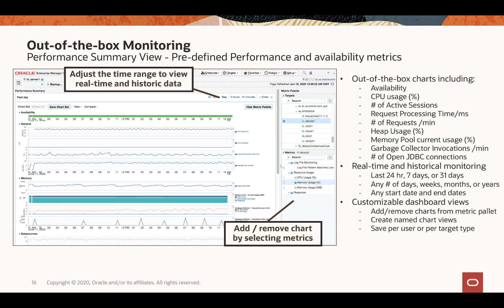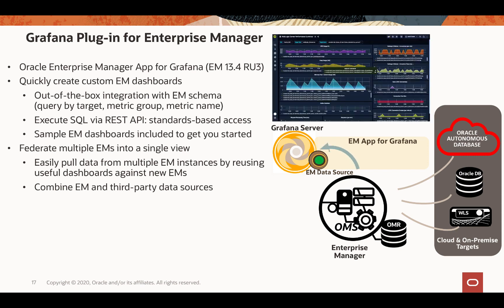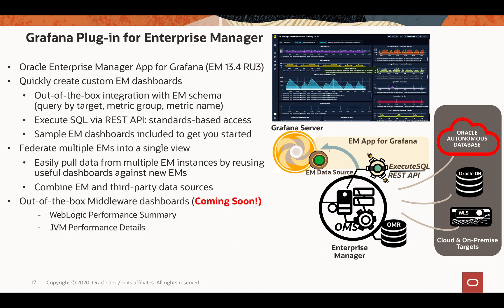In Enterprise Manager 13.4, you can also view the same information on a Grafana server. Grafana is an open-source technology for metric analytics and visualization. Starting from Enterprise Manager 13.4 release update 3, we have an Enterprise Manager app for Grafana, which is ready to plug into your Grafana server. This plugin pulls metric data from your Enterprise Manager repository and displays it on the Grafana UI via REST API underneath. The current release has predefined dashboards for database, and middleware dashboards — including WebLogic performance dashboards — are currently being developed.